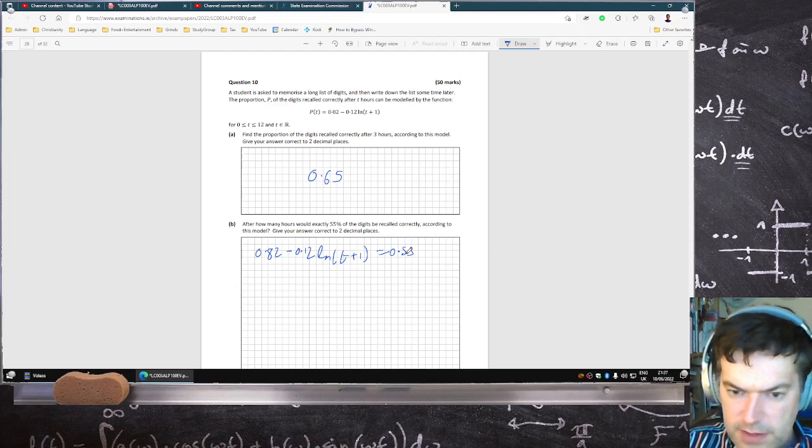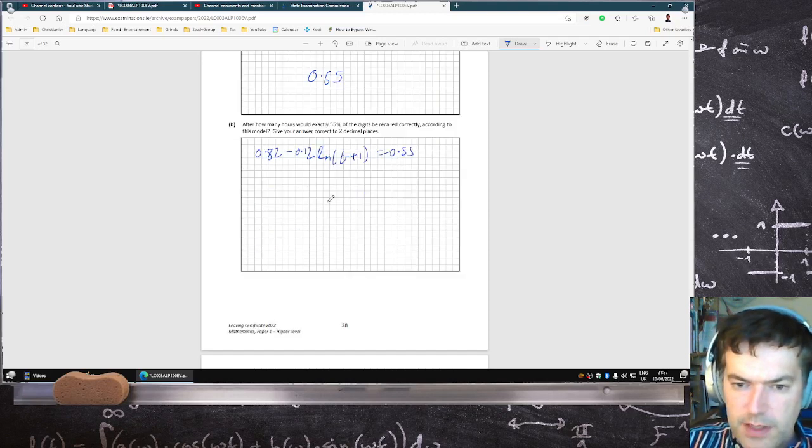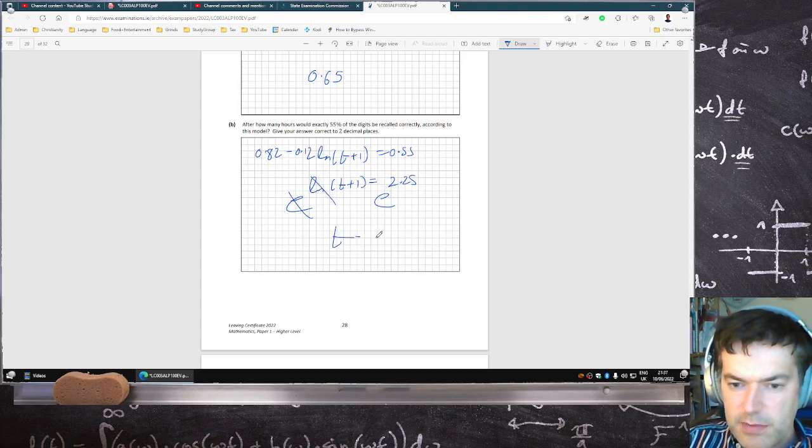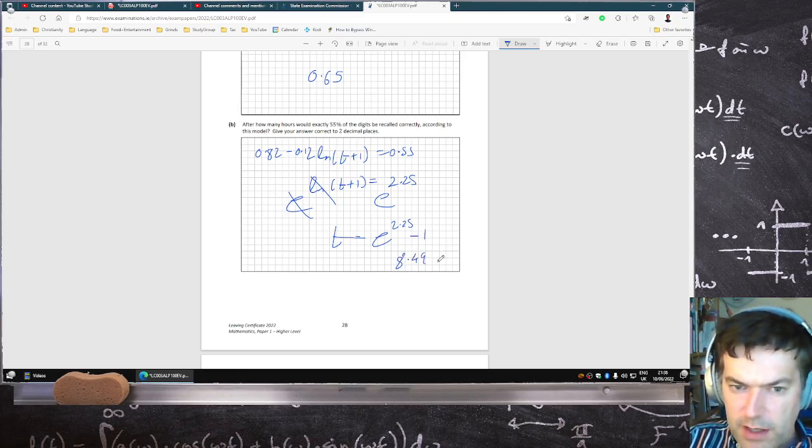So if you solve this, 0.55 minus 0.82 divided by 0.12, that's going to be log T plus 1 equals 2.25. Put e on both sides, cancel the log, and T will be e of 2.25 minus 1. And you get 8.49 hours.